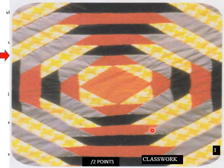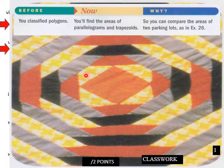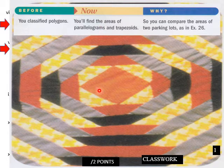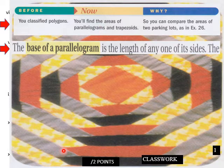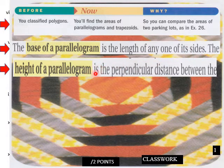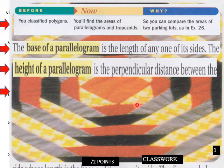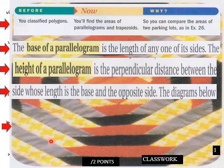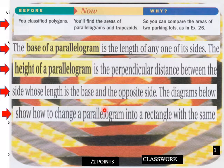Into today's lesson page one on your class worksheet you've classified polygons. You'll find areas of parallelograms and trapezoids. The base of a parallelogram is the length of any one of its sides. The height of a parallelogram is the perpendicular distance between the side whose length is the base and the opposite side.